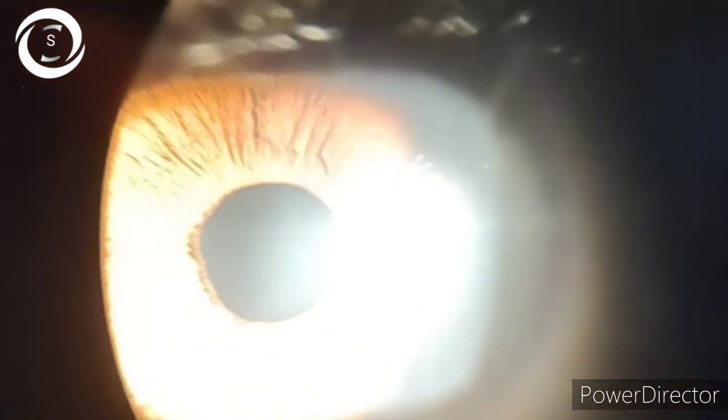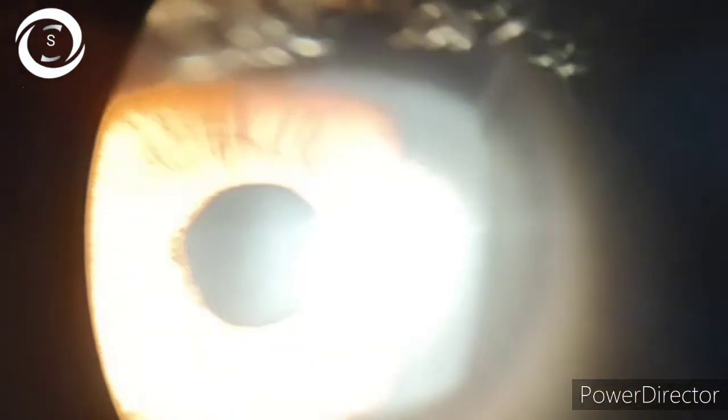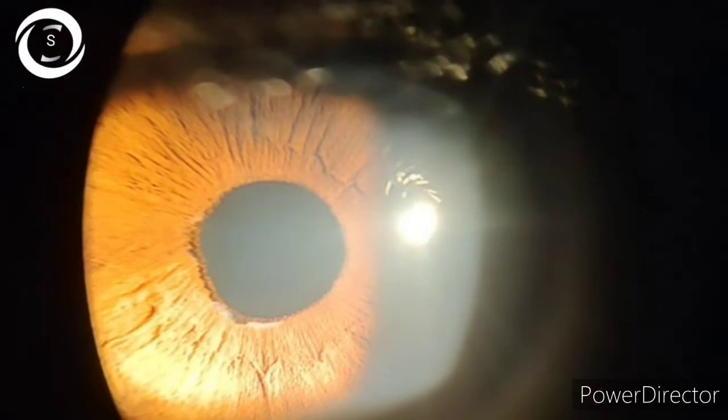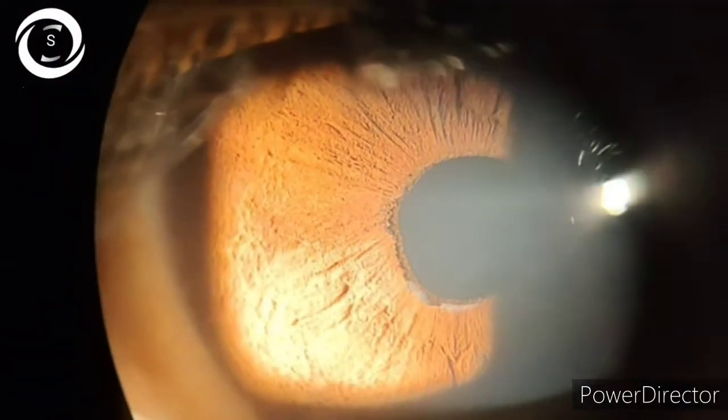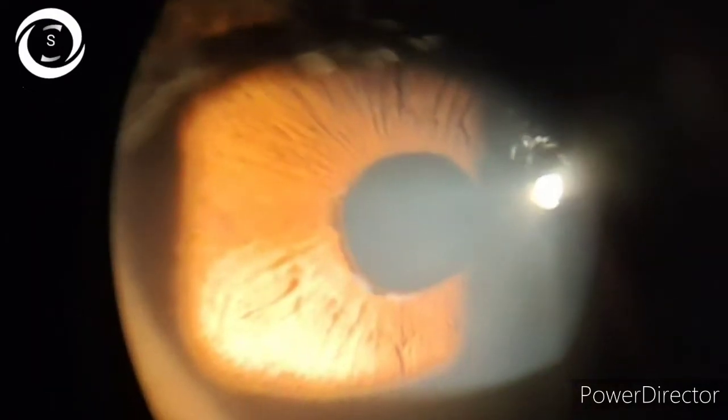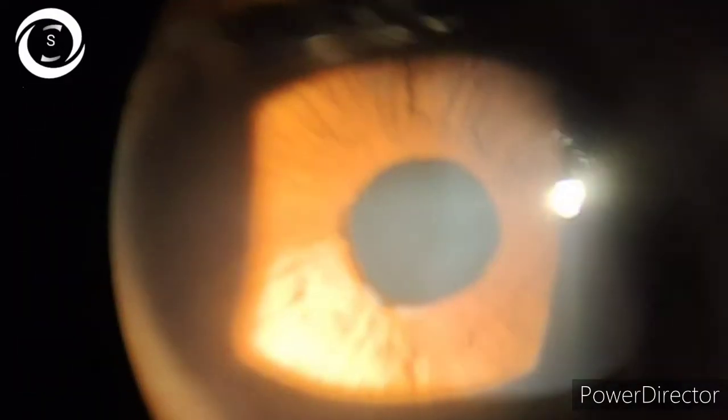The left eye had hazy and edematous cornea, raised intraocular pressure of 28 millimeters of mercury, polycoria, correctopia, and atrophic iris.